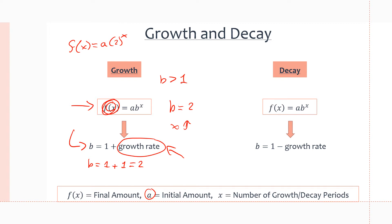For decay, we have the same equation f(x) = a · b^x, but now b is defined as 1 minus the decay rate. With growth we have addition, with decay we have subtraction. For exponential decay, as x increases, the b value must be less than 1. A very common b value for decay is one-half, used when f(x) becomes half the amount each time x increases by 1.